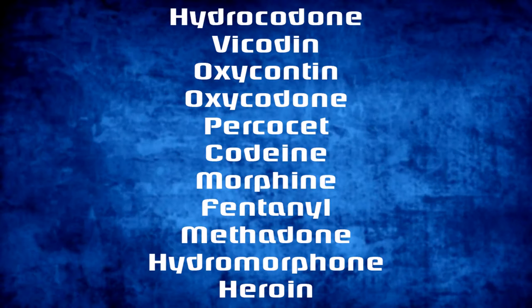Naloxone works only on opiates and opiate derivatives. Some examples of these are hydrocodone, Vicodin, OxyContin, oxycodone, Percocet, codeine, morphine, fentanyl, methadone, hydromorphone, and heroin. Naloxone has zero effects on drugs like methamphetamines, benzodiazepines, and cocaine.